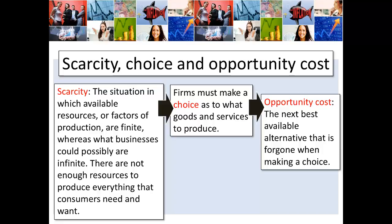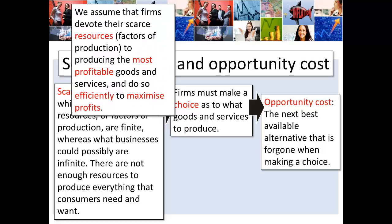We define opportunity cost as the next best available alternative that's foregone when making a choice. So perhaps a business is banking on producing wine, and the opportunity cost of that is perhaps producing beer. The next best alternative available that it gives up — that is foregone — is the opportunity cost. We assume that firms devote their scarce resources, the factors of production, to producing the most profitable goods and services, and to do so efficiently they will maximize their profits. This is one of the key assumptions we make in economics.